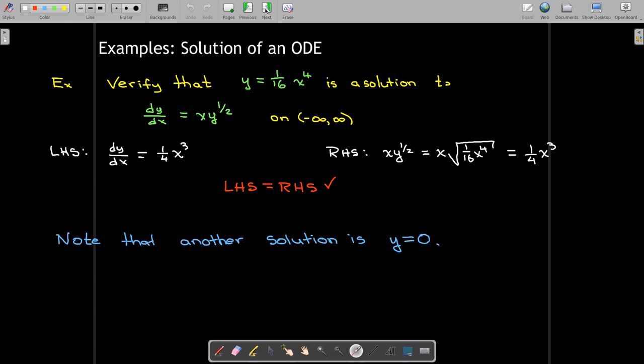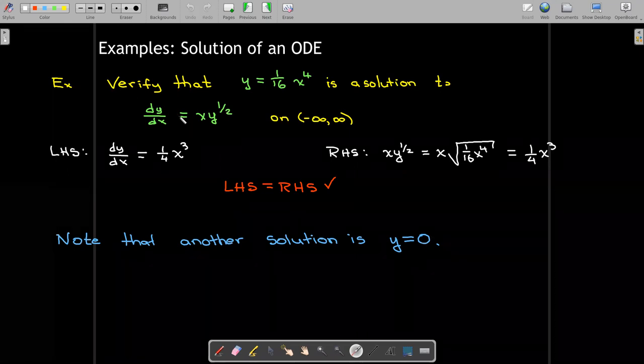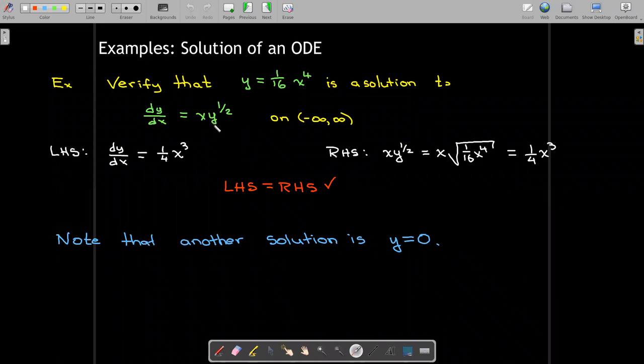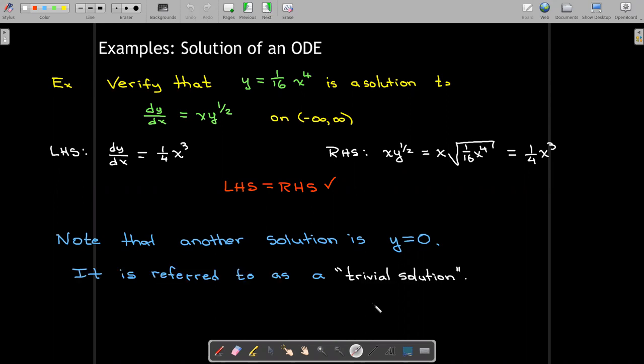In this case, I want to note that there is another solution. It's just y equals 0. If you put that into our differential equation, the derivative of a constant function is 0. And if I take 0, and I can take its square root, that will be 0 multiplied times x. It's identically 0. But this is such a simple solution. We call it a trivial solution. The other solution would be called a non-trivial solution.